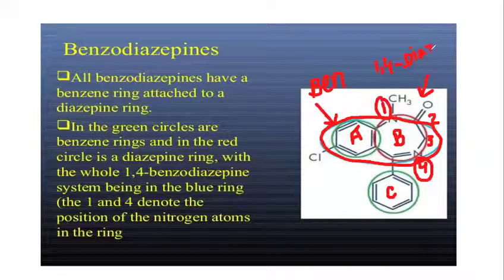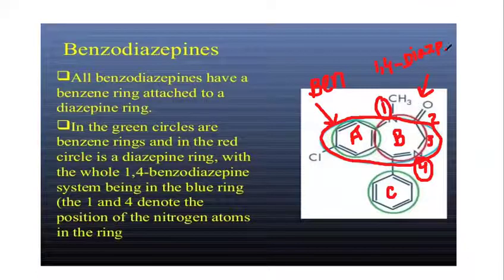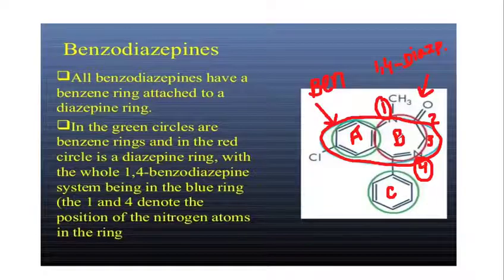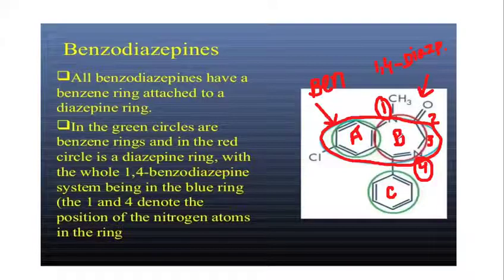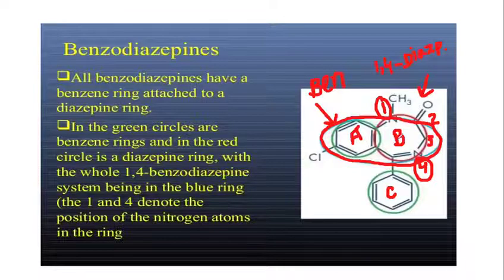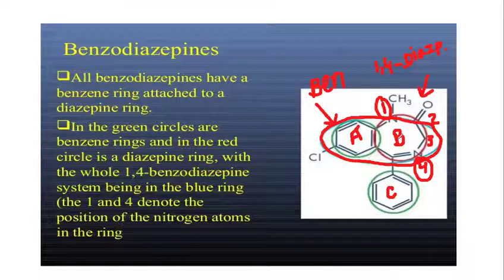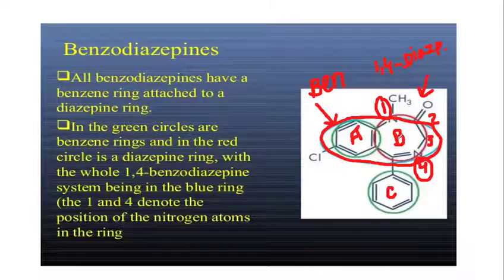So it is clear: Ring A is an aromatic ring, Ring B is a 7-membered heterocyclic ring with nitrogen at positions 1 and 4. We call it 1,4-diazepine, or overall benzodiazepines. These are 1,4-diazepine derivatives.